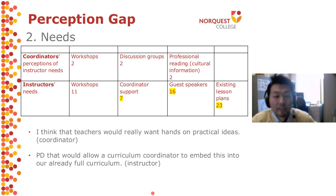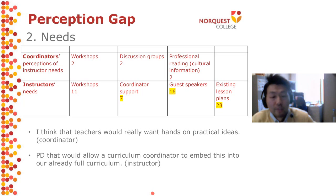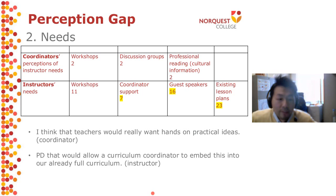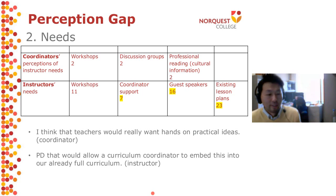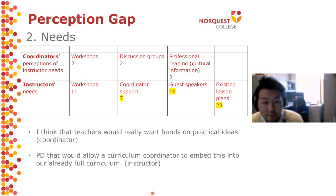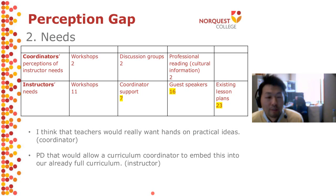The next perception gap is about needs — what kind of needs do teachers have? Coordinators seem to think teacher needs are having more workshops, discussion groups, or professional reading so they can learn and gain knowledge that will enable them to teach culture and intercultural communication. One coordinator commented that teachers will really want hands-on practical ideas. But it was a little bit different from the teachers' side — they said they want existing lesson plans they can print and use, guest speakers, and more coordinator support to make those arrangements.